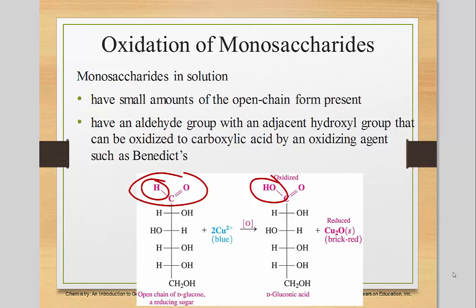So if we're looking at this, glucose is an aldehyde. In order for it to be oxidized, you have to have a hydrogen there to sacrifice, which aldehydes do. So when you do a Benedict's solution test, you can actually oxidize these aldehydes because you can insert an oxygen between the carbon and the hydrogen and make an OH group.